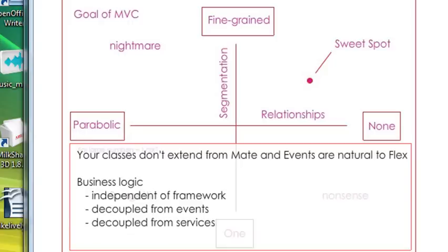Let's wrap all this up. What was the purpose? It was to find our sweet spot so we can loosely couple our architecture, have some fine graining, and basically increase productivity and decrease the amount of maintenance we have to do as we build and modularize our different Flex applications. Basically, your classes don't extend from MATE and they use the natural event mechanism of Flex. You haven't created another level of architecture to make that MVC architecture work. The business logic is independent of the framework. It decouples from the events and decouples from the servers. And this is fantastic.